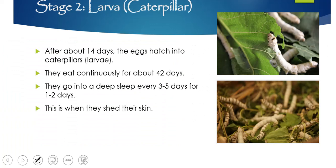Stage two is the caterpillar or larva stage. About 14 days after the eggs have been laid, they hatch into caterpillars and they eat continuously for 42 days. Every three to five days, they normally have a little nap, and their nap lasts between one and two days. So in their 42 days of eating, they have naps for a couple of days every few days. While they are napping, they actually shed their skin as well — the skin doesn't stretch, so they need to shed their skin and grow new skin. They do that while they're sleeping, so they're very productive in their sleeping.